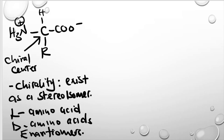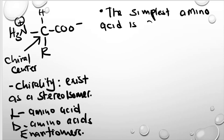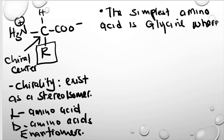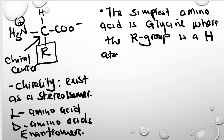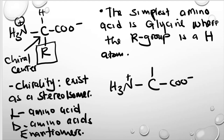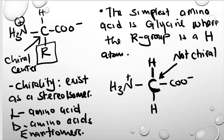The simplest amino acid is glycine. In glycine, the R group is simply a hydrogen atom. If you draw the structure of glycine, the R group would be hydrogen, meaning this central carbon is attached to two hydrogens. Therefore, the carbon in glycine is not chiral — it cannot exist as enantiomers.